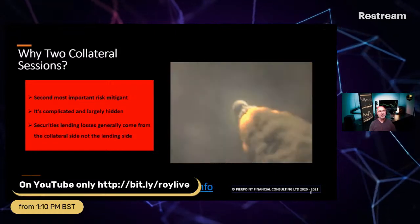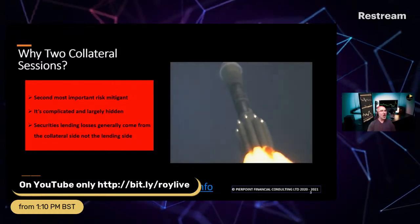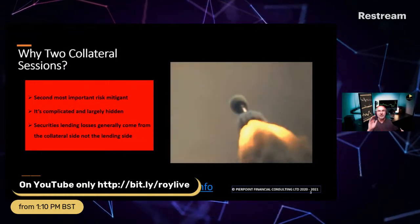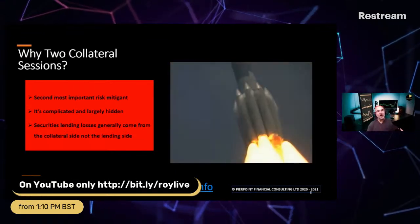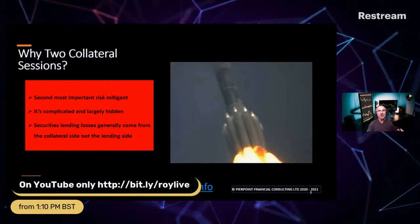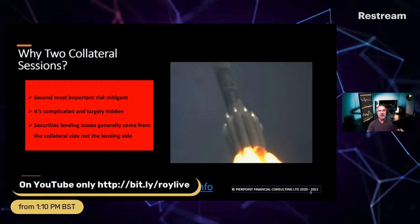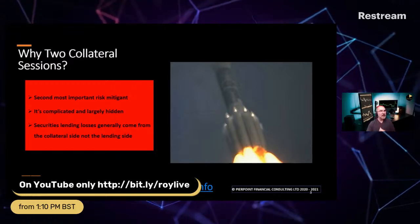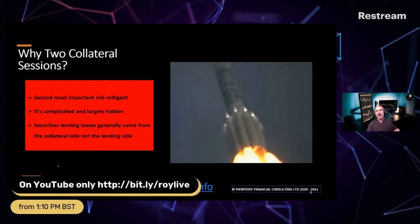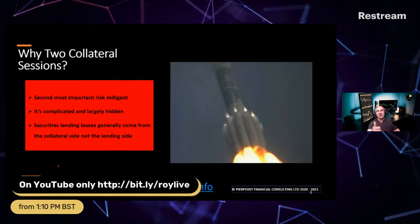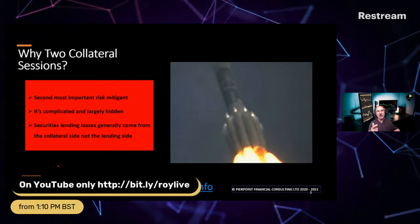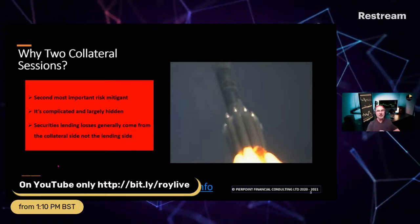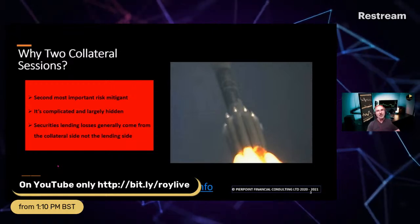I'm going to be switching over now. If you're watching on LinkedIn or Facebook and you want to keep watching, you need to switch over to YouTube. Now we're back with YouTube only. Collateral is important and we're doing two sessions because it's the second most important risk mitigant, it's complicated and largely hidden from most people's view, and most securities lending losses have arisen because of decisions made on the collateral side rather than on the lending side.